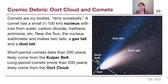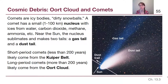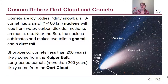Short-period comets — ones that return in less than 200 years — come from the Kuiper Belt in general. Halley's Comet is one of the most famous. They have the outer part of their orbit in the Kuiper Belt, come into the inner solar system, and then go back out again.